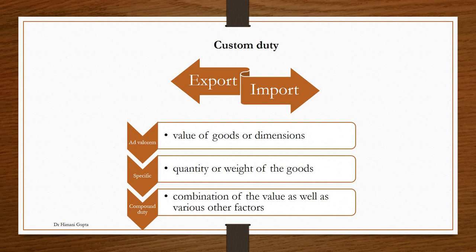There are different kinds of rates applicable under custom duty. The first rate is ad valorem, the second is specific rate, and the third is compound duty. Ad valorem means duty which is charged on the value of goods.